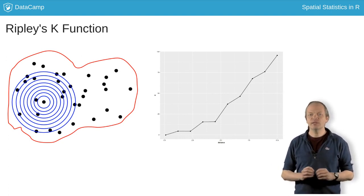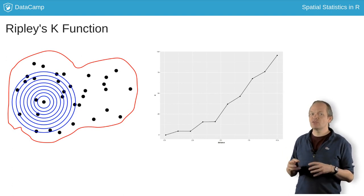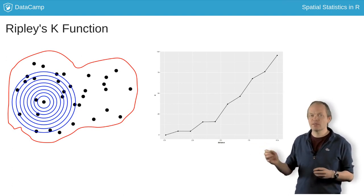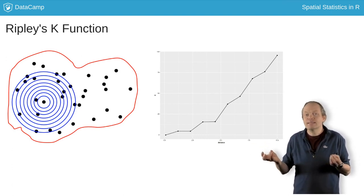For a completely spatially random process, this gives K of d equals pi times d squared, the area of a circle of radius d.